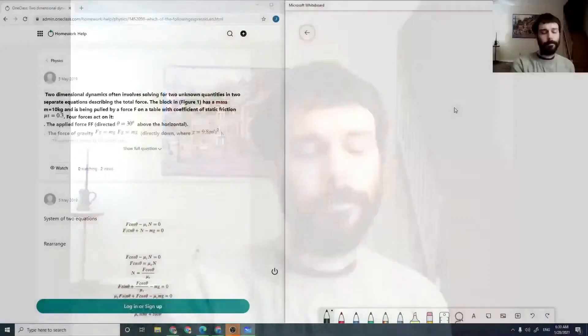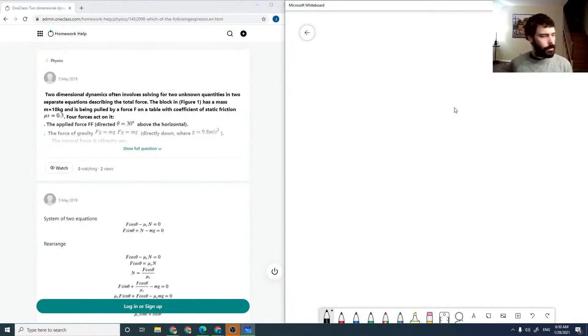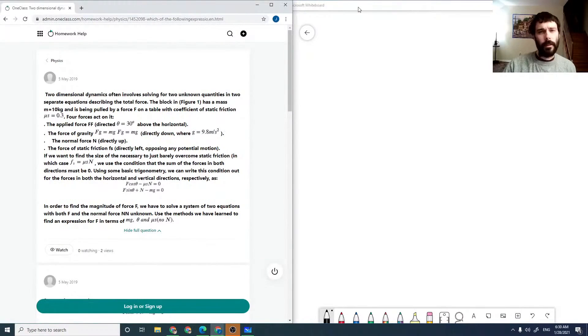Welcome to One Class. My name is Jeff Krauss. I have a PhD in physical chemistry, and today I'm going to go through a few undergraduate level to high school level physics questions. So here's our first one. We have two-dimensional dynamics which often involves solving for two unknown quantities in two separate equations.